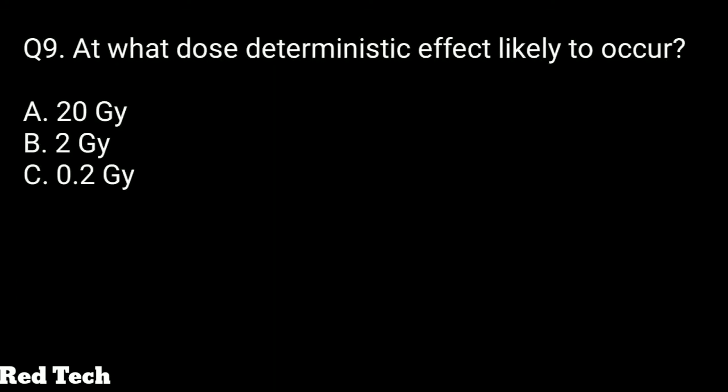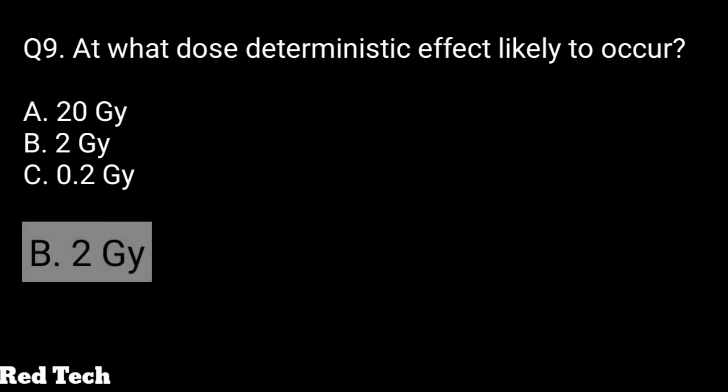Question number nine: at which dose does the deterministic effect likely occur? The options are 20 gray, 2 gray, or 0.2 gray. The right answer is 2 gray — 2 gray is basically the average dose considered safe, but above 2 gray there will be a deterministic effect.